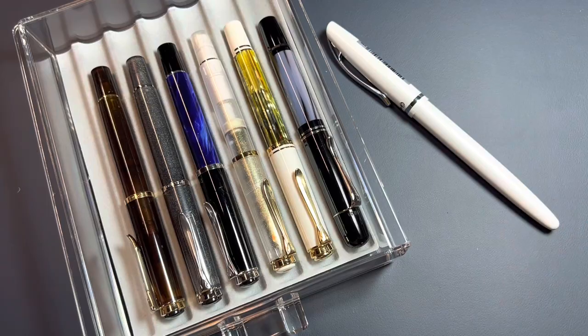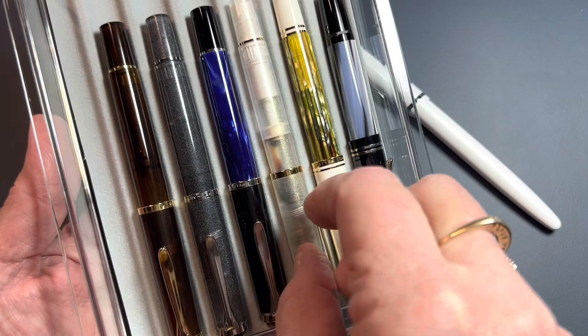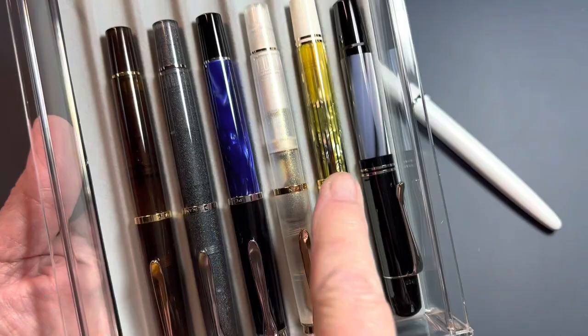So, these are my other Pelican models. They're all M200. Most of them are M200. The Smoky Quartz, the Moonstone, the Blue Marble, the Golden Barrel. And then the White Tortoise, White and Tortoise Shell is an M400. They're all the same size. The only difference is these are steel nibs and this one's gold.